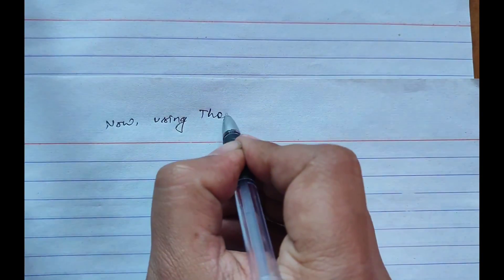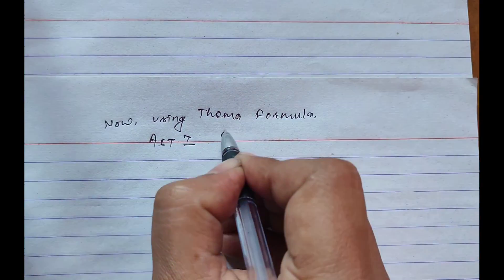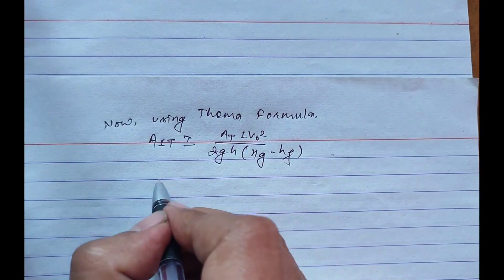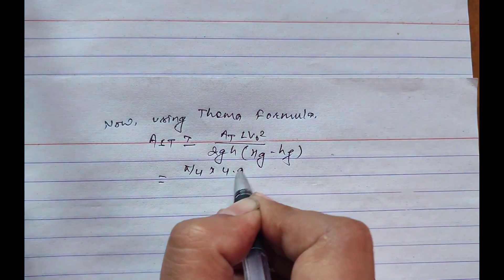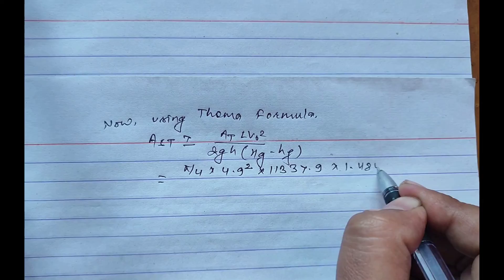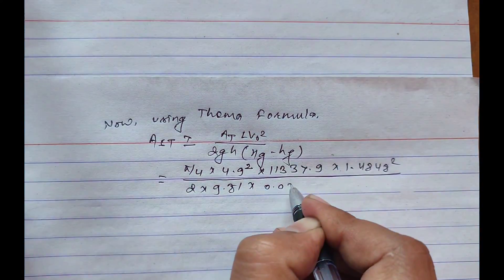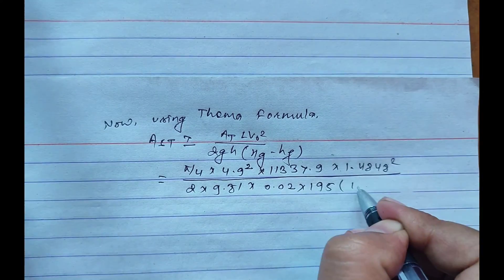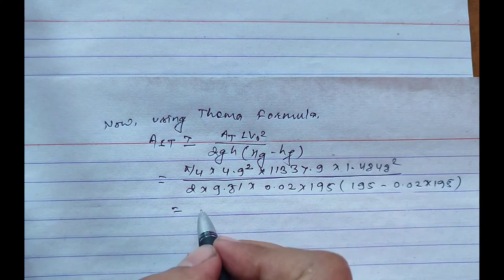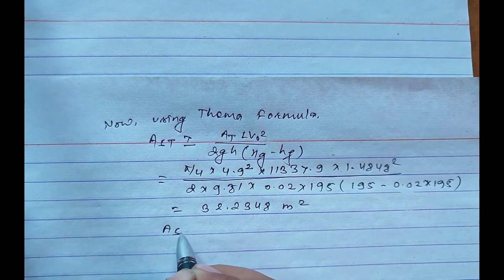Now using Thoma formula: A_st is greater than or equals to pi times L times L times v_0 square divided by 2g times h_g minus h_f. Equals pi by 4 times 4.9 whole square into 11,337.9 into 1.4848 whole square divided by 2 into 9.81 into 195 times 195 minus 0.02 times 195. On solving this, there will be 32.2348 meter square which satisfies A_st is greater than A_st calculated.